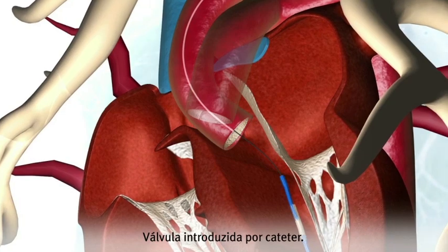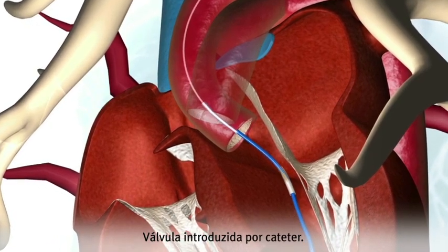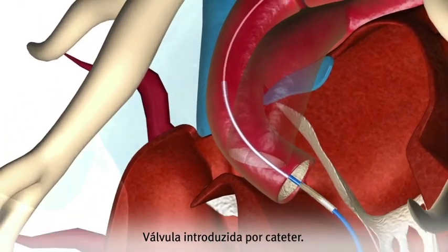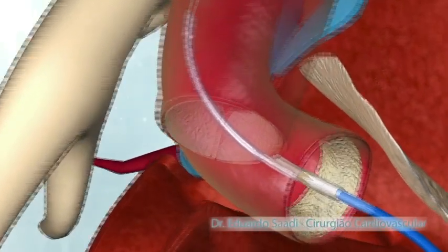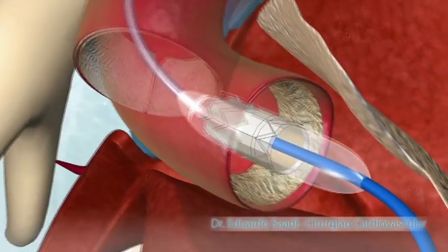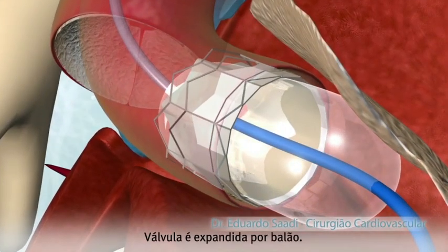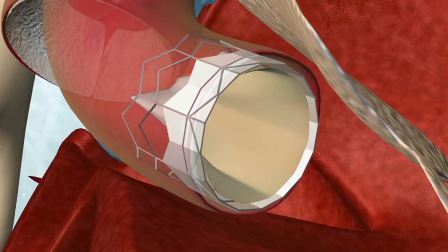The trans-catheter valve is inserted by the heart apex and positioned at the level of the native diseased valve. The balloon is inflated for complete expansion of the prosthesis, which now works normally.